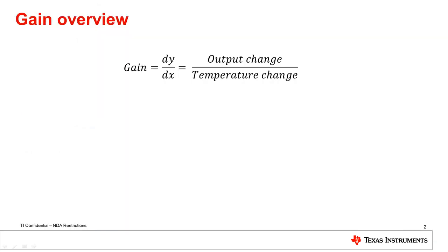The gain or sensitivity of an analog temperature sensor is a measure of how much the sensor output changes, dy, with respect to the change of temperature, dx, usually 1 degree Celsius.